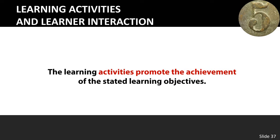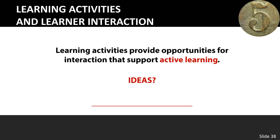General Standard 5 covers learning activities and learner interaction. Activities should promote learning objectives and support active learning, since online learning can seem isolating and passive. Discussion boards allow students to interact with each other. You could also have students create videos, screencasts, or infographics — having them analyze and synthesize content — to make the course more active and engaging.